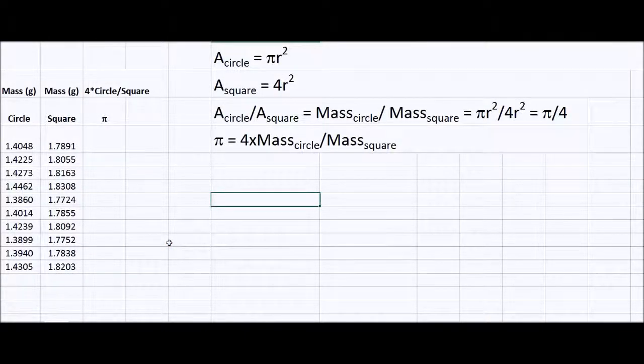As I said before, we have a circle and a square. The area of the circle is πr squared. The area of the square is 4r squared, because the length of the side of the square is 2r. The ratio of the area of the circle to the square equals the mass of the circle divided by the mass of the square. That's equal to πr² over 4r², which is π over 4. Solving for π, π equals 4 times the mass of the circle divided by the mass of the square.